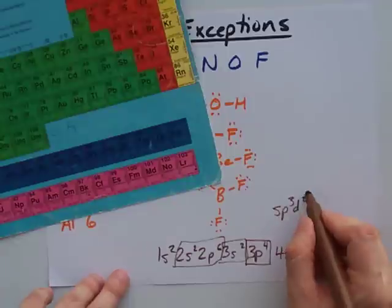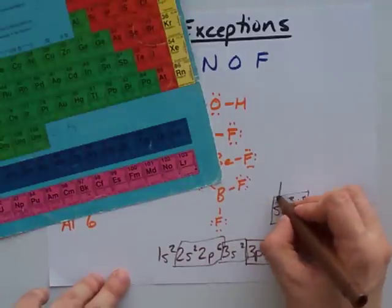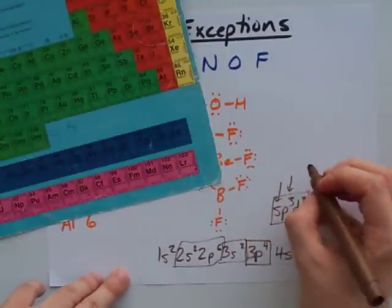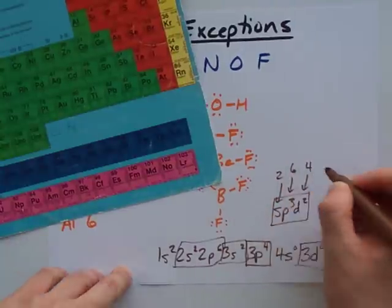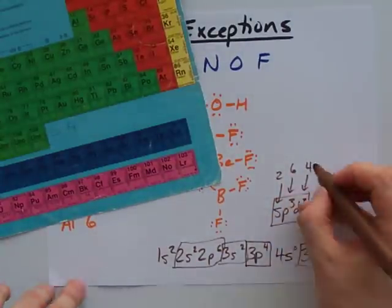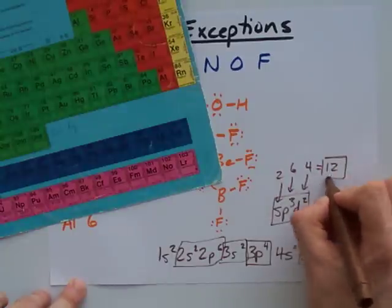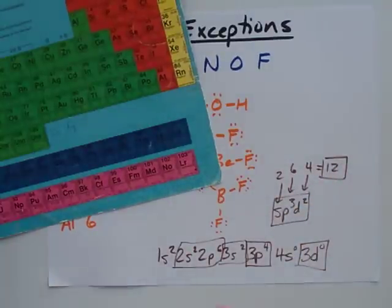Rather than there being 8 electrons in the s and p shells combined, you can actually get up to 12: 2 for the s's, 2 for each of the p's (that makes 6), and 2 for each of the d's (that makes 4), which means some of these atoms can hold up to 12 electrons in their outer shell.